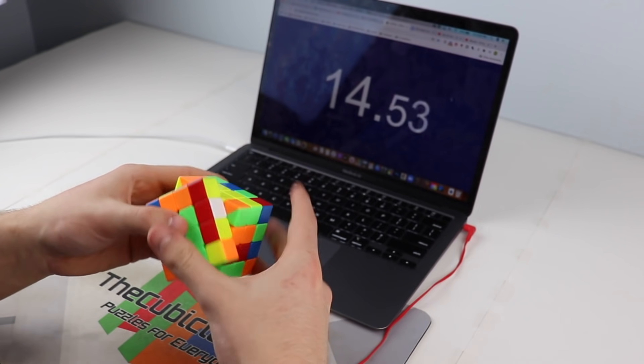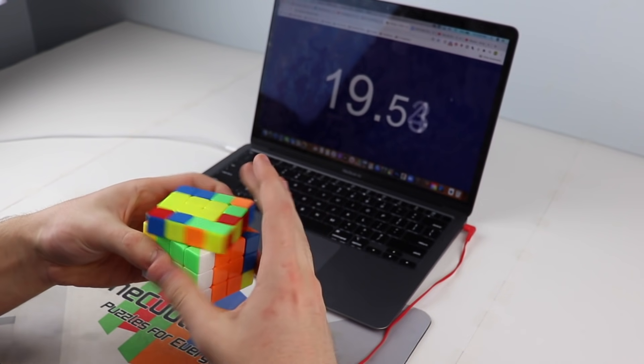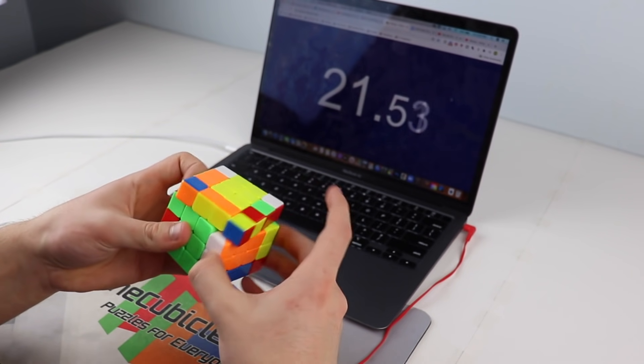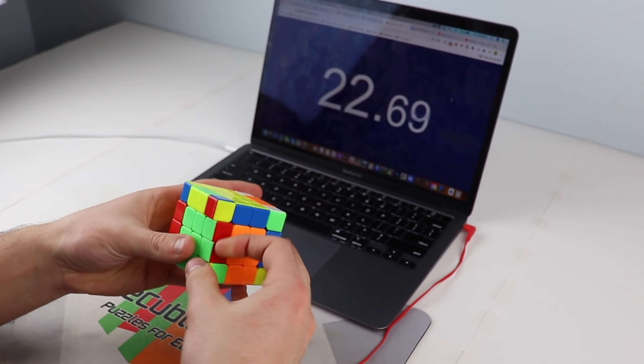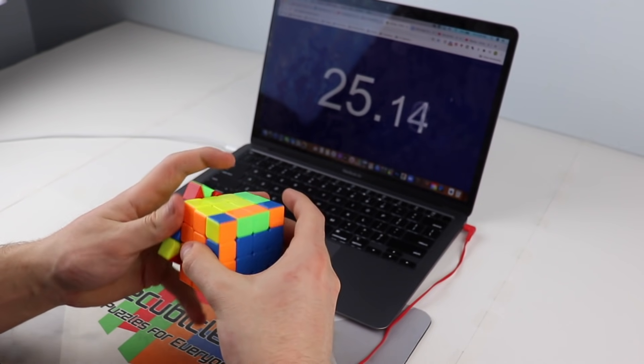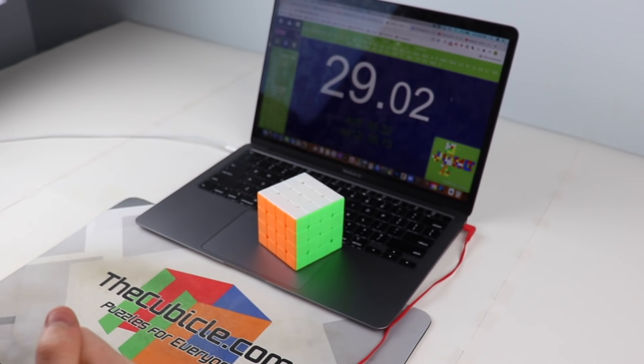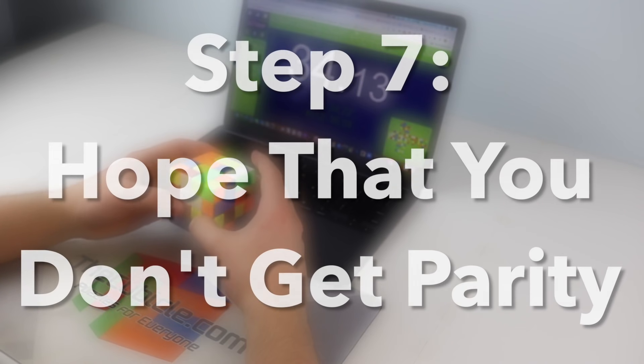My last cross edge could have been better, but my edge pairing went relatively smoothly. Nothing incredibly lucky there, but nothing went wrong, which is equally important. Because of that, I was onto my 3x3 stage at 22.7 seconds. The crazy thing is even that level of a beginning usually wouldn't be enough. I'd still need a 7.3 second 3x3 stage or better for sub-30, which is easier said than done. The only reason I clutched out the 29.02 is because I got an exceptionally good ending to the solve as well. That leads us to the final step.